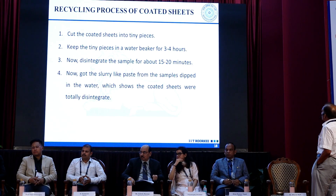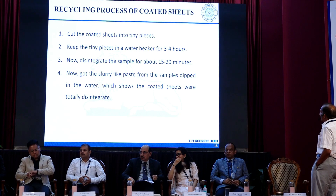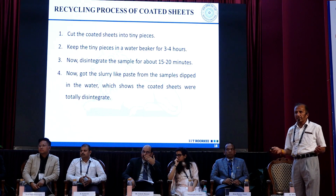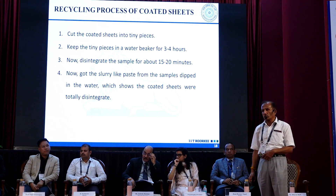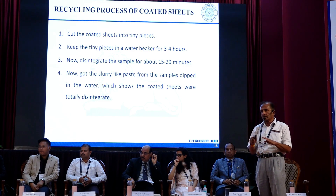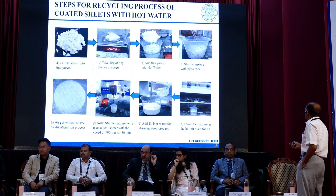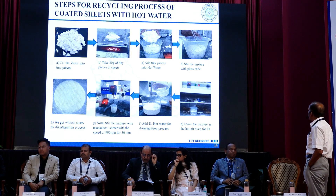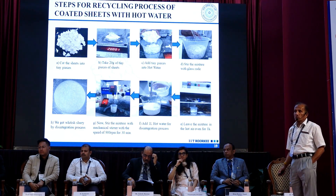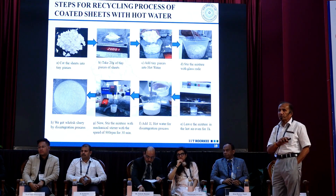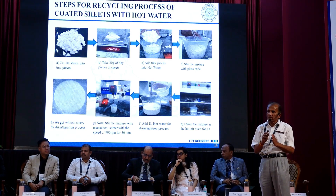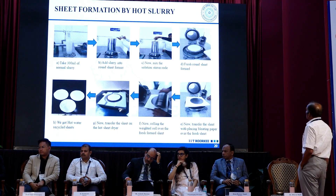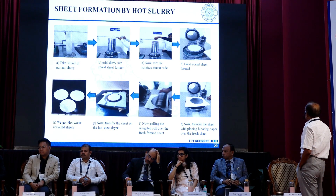This shows the recycling process of this coated sheet. We cut the coated sheet into tiny pieces, then used 6% sodium hydroxide solution during the pulping process. These are the steps for the recycling process of coated sheets with hot water. When we made a sheet, there was no speck — all the fibers were distributed uniformly with no aggregation of fibers. This is the sheet formation by hot slurry.